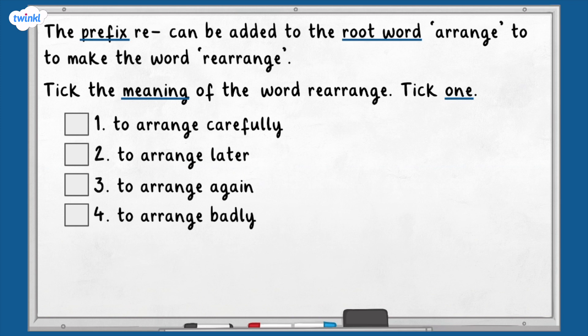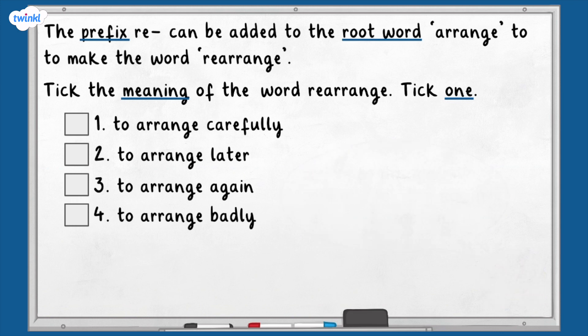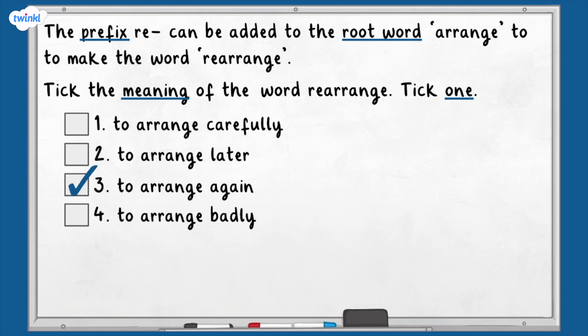The prefix re means to do again, as in all of these words: redo — to do again; replay — to play again; re-seal — to seal again. Therefore, the answer must be number three: to arrange again. Well done if you knew the answer to that one.